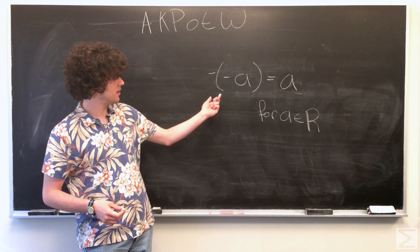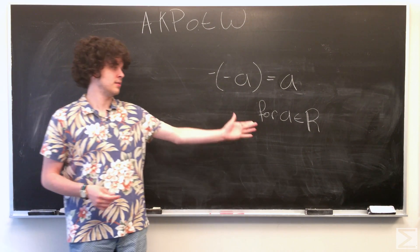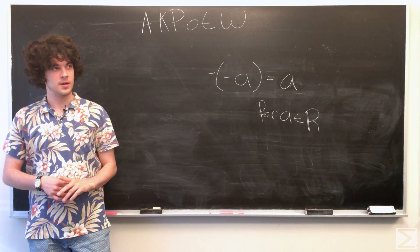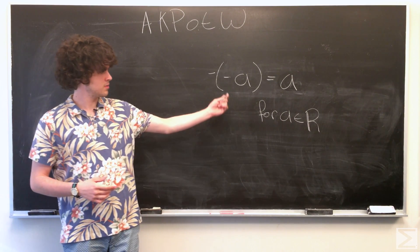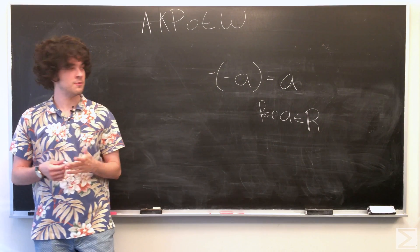This week, we're proving that negative negative a is equal to a for a in the real numbers. So we know the real numbers are a field, so we can prove this just using the axioms of a field.